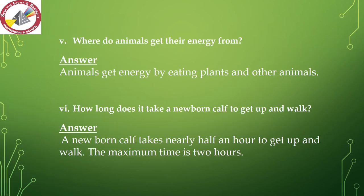Number 5 — where do animals get their energy from? Animals get energy by eating plants and other animals. Number 6 — how long does it take a newborn calf to get up and walk? A calf is a baby of a cow. A newborn calf takes nearly half an hour to get up and walk, with a maximum time of 2 hours.